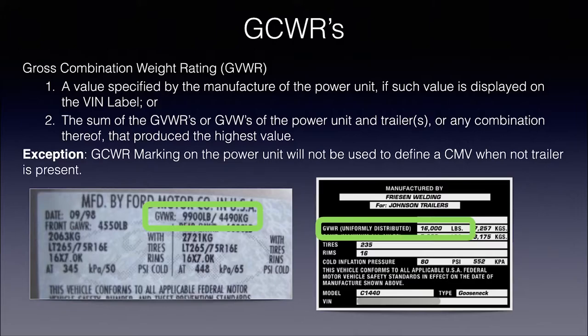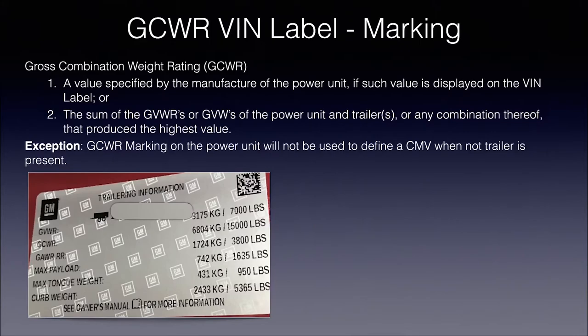Gross combination weight ratings have two points: it can be the value specified by the manufacturer of the power unit, displayed on the VIN label, or it can be the sum of both gross vehicle weight ratings or gross vehicle weights added together. In this combination, we have 16,000 with 9,900 pounds — add those together and we are over 10,000 pounds on that combination weight rating. Some units can have that marking on the power unit — on this particular GM truck you can see a gross combination weight rating marking of 15,000 pounds.